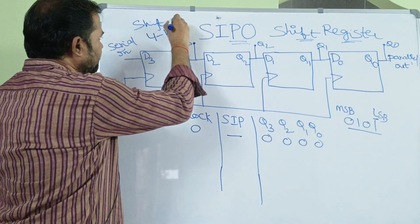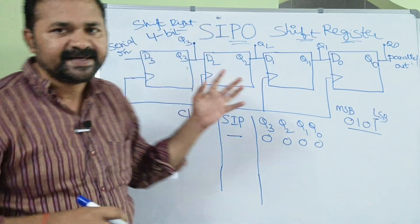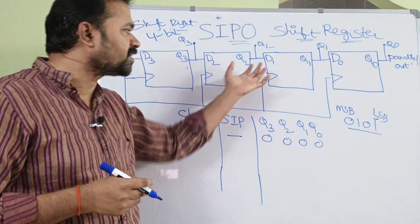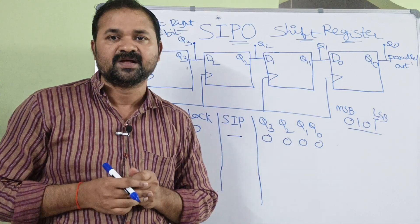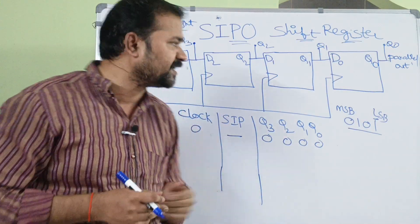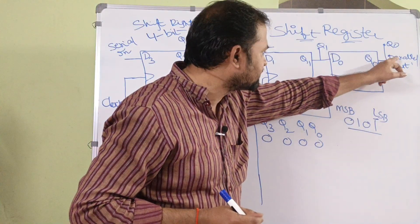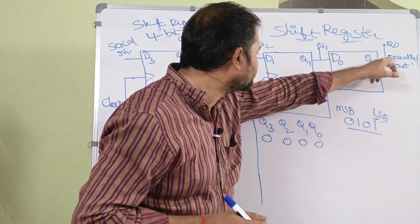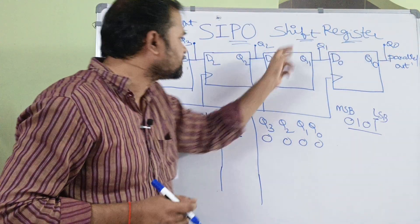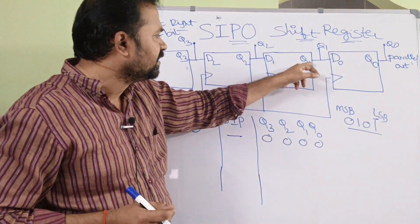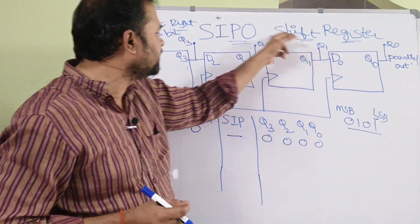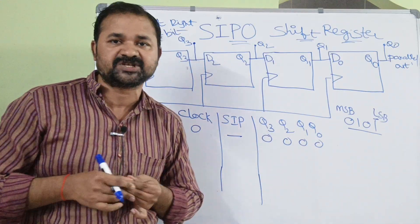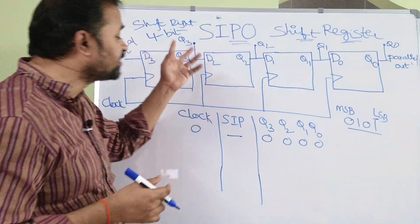We are performing the shift-to-right operation. Shift-to-right means each bit will be shifted one position to the right. If we want, we can also perform shift-to-left operation. For shift-to-left, we pass serial input to the last flip-flop, connect Q0 as input to D1, and connect Q1 as input to D2. But the most popular operation is shift-to-right.